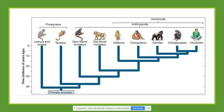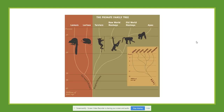Now I want to show you another taxonomy that is more modern. We call these contemporary taxonomies. Contemporary taxonomies are focused on the evolutionary relations that biologists think were responsible for similarities and differences between species.